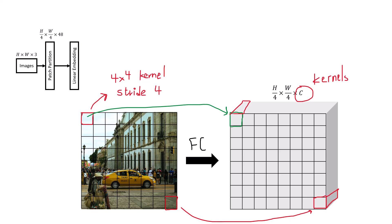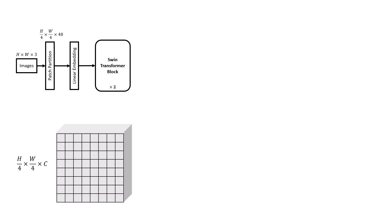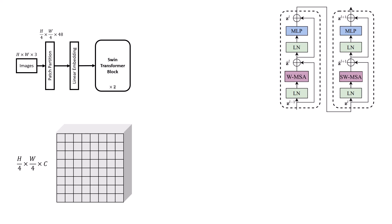The main contribution of this paper is proposing a new type of block called the Swin Transformer Block. Swin stands for shifted window. The Swin Transformer Block is always a multiple of 2. Inside, we have two transformer blocks that are exactly like standard transformers, except instead of multi-head self-attention, we first have WMSA — window-based multi-head self-attention — and then SwMSA — shifted window multi-head self-attention. After every WMSA we need a SwMSA, which is why the Swin Transformer Block count must be a multiple of 2.